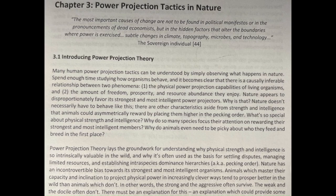Nature appears to disproportionately favor its strongest and most intelligent power projectors. Why is that? Nature doesn't necessarily have to behave like this. There are other characteristics, aside from strength and intelligence, that animals could asymmetrically reward by placing them higher in the pecking order. What's so special about physical strength and intelligence? Why do so many species focus their attention on rewarding their strongest and most intelligent members? Why do animals even need to be picky about who they feed and breed in the first place?